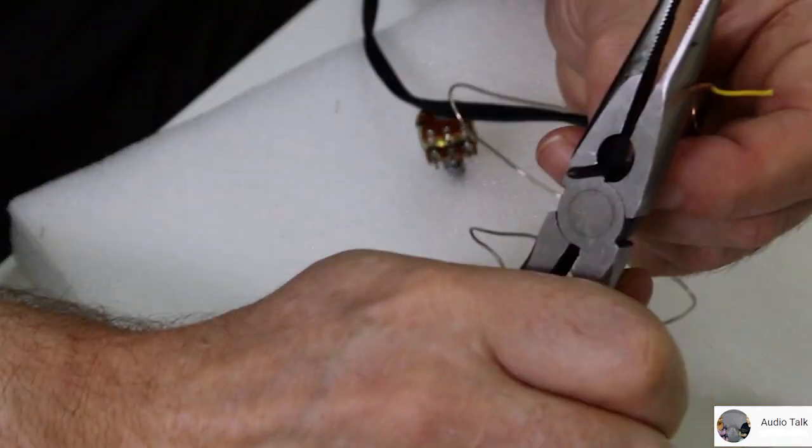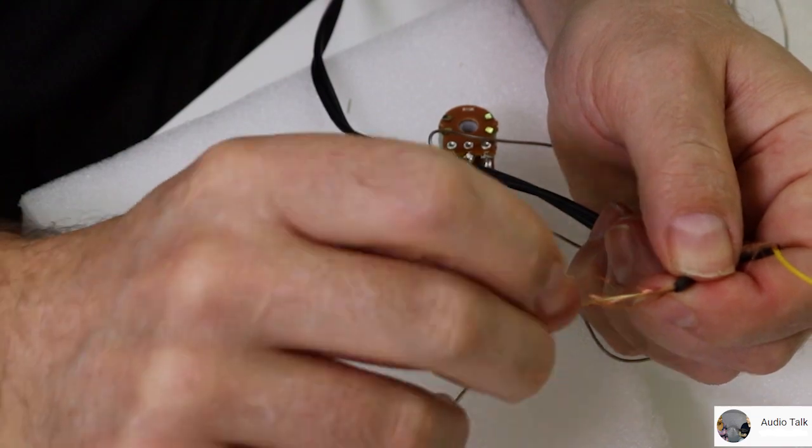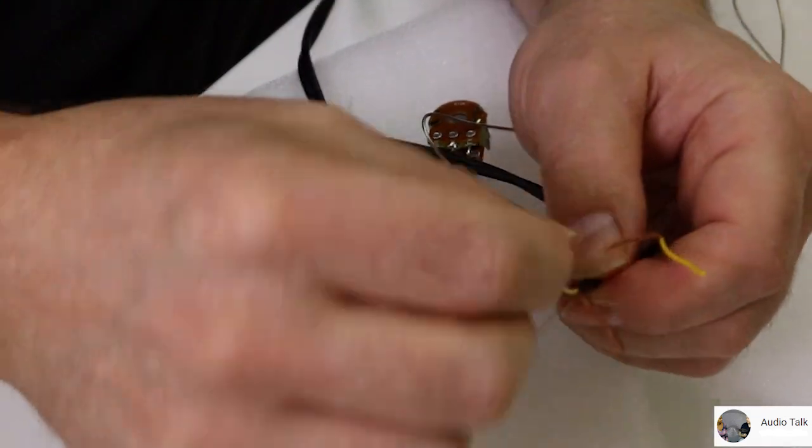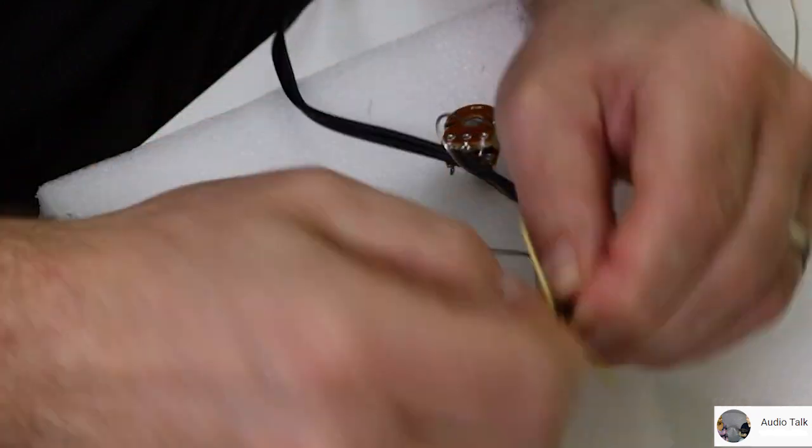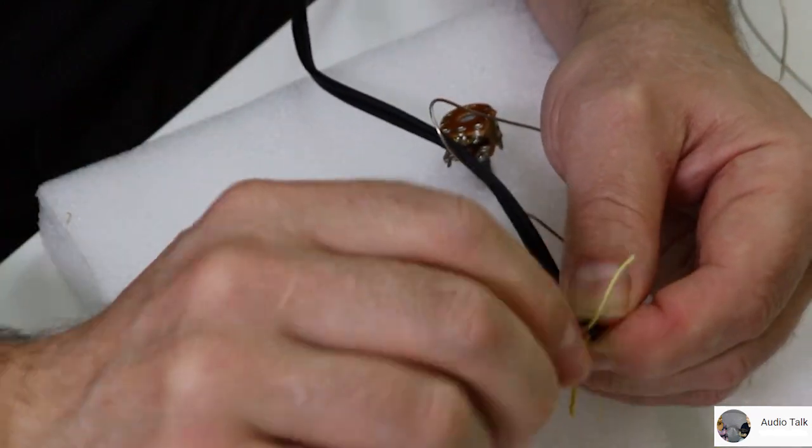I'm going to separate all the ground wires together and put those together. We're actually not going to give those solder. We're going to put those together with the other one and then solder all the ground wires together.